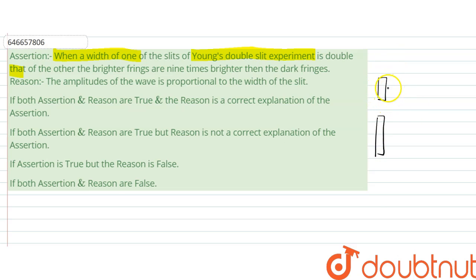So I'll draw it small - one slit and the second slit. So this is d, this is 2d. What they are saying is that the brighter fringe are nine times brighter than the dark ones. So the brightness is proportional to intensity.